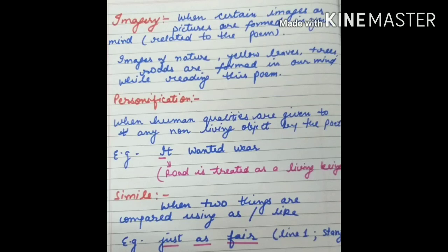Next: imagery — when certain images or pictures are formed in your mind while reading the poem. When we read this poem, images of nature, yellow leaves, trees, and roads are formed in our mind. Next: personification — when human qualities are given to a non-living object. In this poem the line 'it wanted wear' refers to the road — road is non-living but treated as a living being. Finally, simile — when two things are compared using 'as' or 'like'. Example: 'just as fair' in stanza 2, line 1.